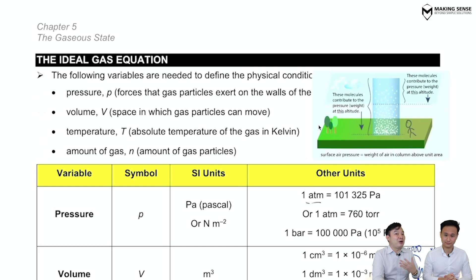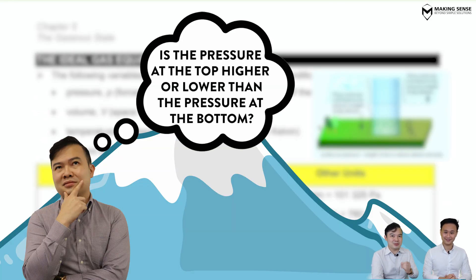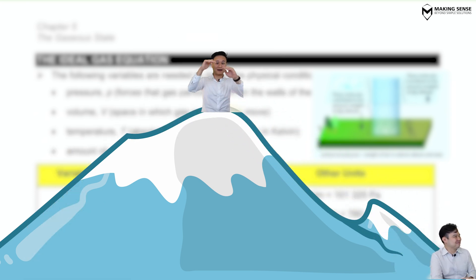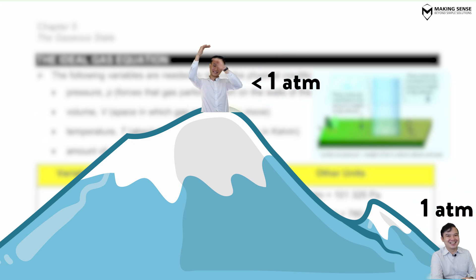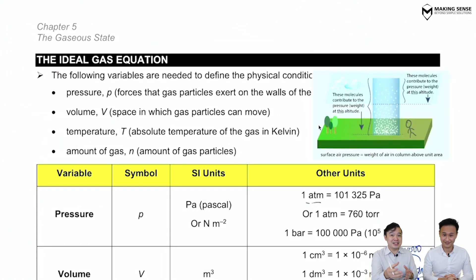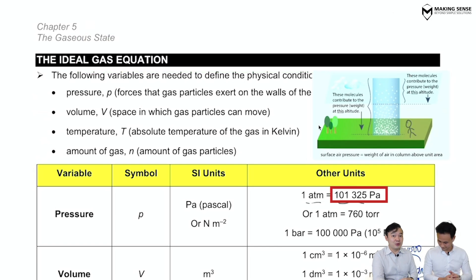If you decide to go up to Mount Everest, can you tell me whether the pressure should be higher or lower than one atmosphere? Well, if I manage to get all the way up there and survive, the amount of gas particles is lesser, so therefore pressure is lower. That's right. So one atm is a unit for pressure, but normally we use pascals. The conversion is 1 atm = 101,325 pascals, which is in your data booklet.